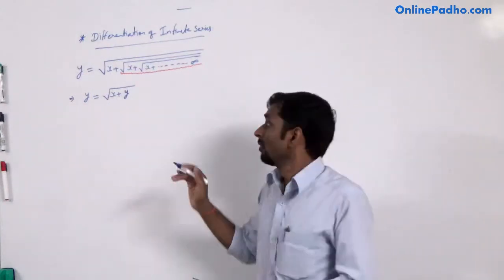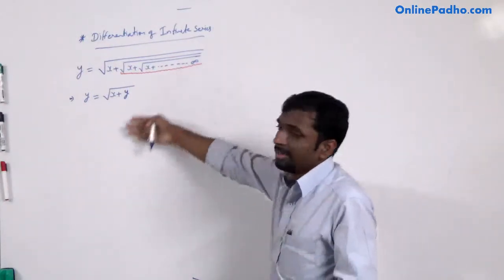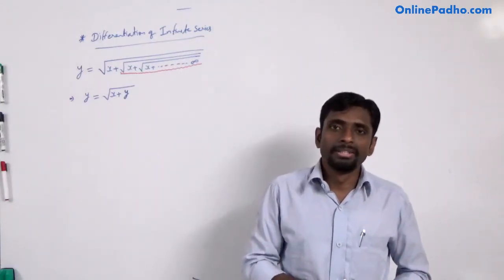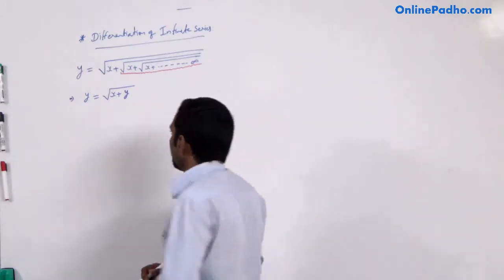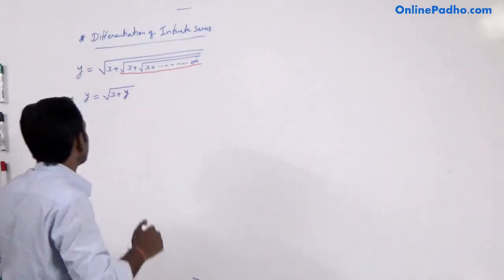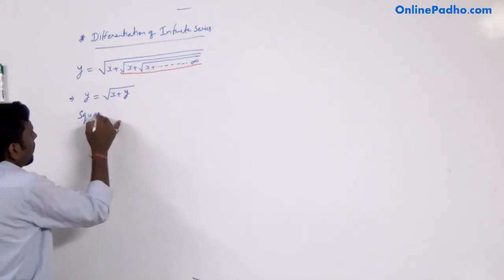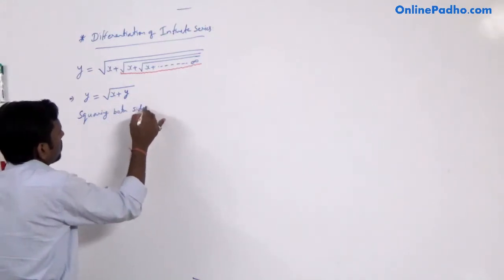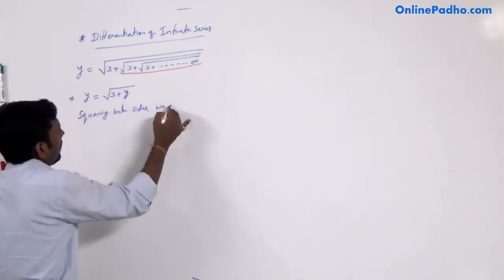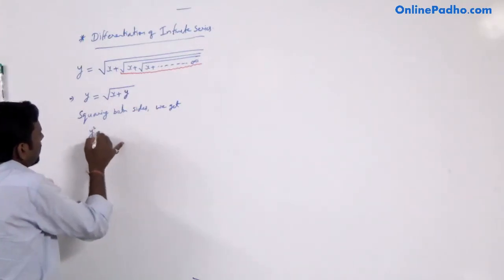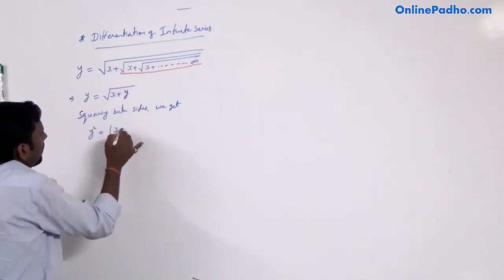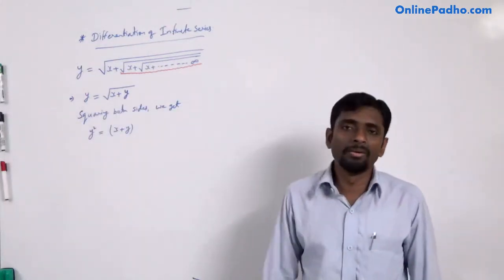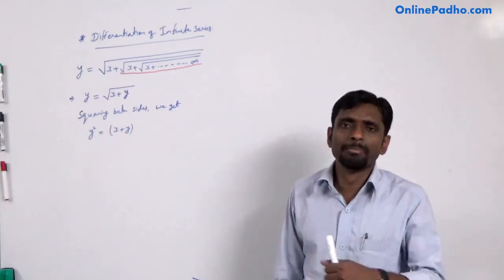Now we simplify this — the dot dot dot infinite is eliminated. We can differentiate to find dy/dx, but before differentiating, we first simplify the square root function by squaring both sides. Squaring both sides, we get y² = x + y. Now it is very simple to differentiate and find dy/dx.